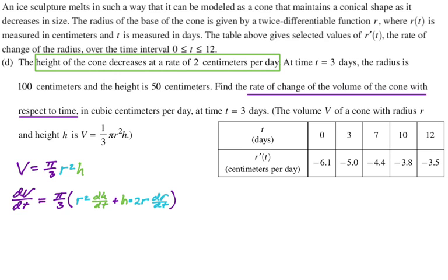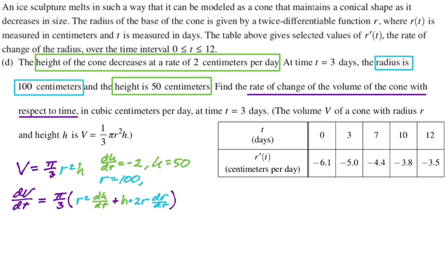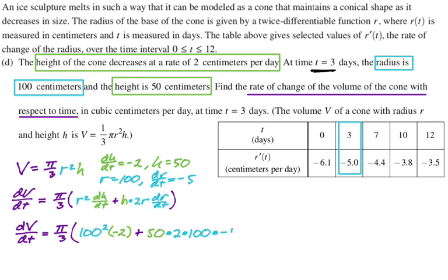The height of the cone decreases at a rate of two centimeters per day. So that's going to be dh/dt. And you're decreasing, which means that's going to be negative 2. Next up, we need h. They tell us that the height is 50. So h is 50. We're going to need r, but that's given as well. So the radius is 100. So r is 100. And then we need dr/dt. So we need to realize that the table gives us r prime of t, which is dr/dt. So we need r prime of three, which is right there. And that'll give us dr/dt is negative 5. Now we're just going to sub in. So dV/dt is going to be pi over three, the quantity, and I'm just subbing in 100 squared, negative 2, plus 50 times 2 times 100 times negative 5.